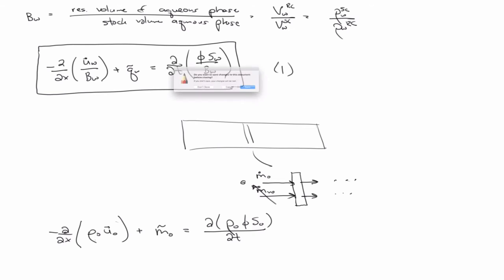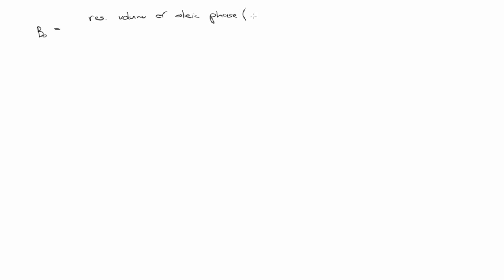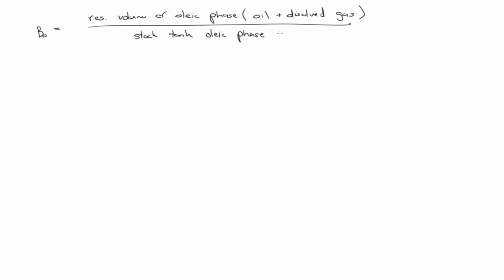Now let's take a look at the formation volume factor for oil. BO is the reservoir volume of the oleic phase — and this includes oil plus dissolved gas — over the stock tank oleic phase, and this is oil only.